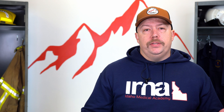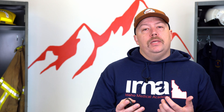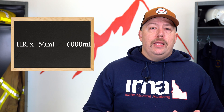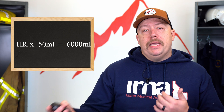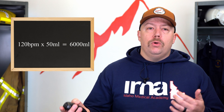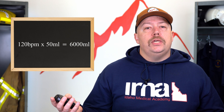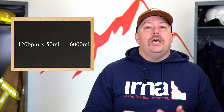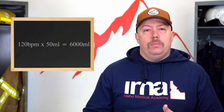Now let's take that same patient and say their stroke volume drops — maybe they have a tension pneumothorax so the heart can't fill as fully, or there's fluid loss from bleeding. Let's say stroke volume is cut in half to 50 milliliters. To still achieve a cardiac output of 6,000 milliliters, we'd need to double the heart rate — because stroke volume is cut in half. That is compensation. We see heart rate go up because volume is going down, but we need to maintain homeostasis, so cardiac output needs to stay the same.